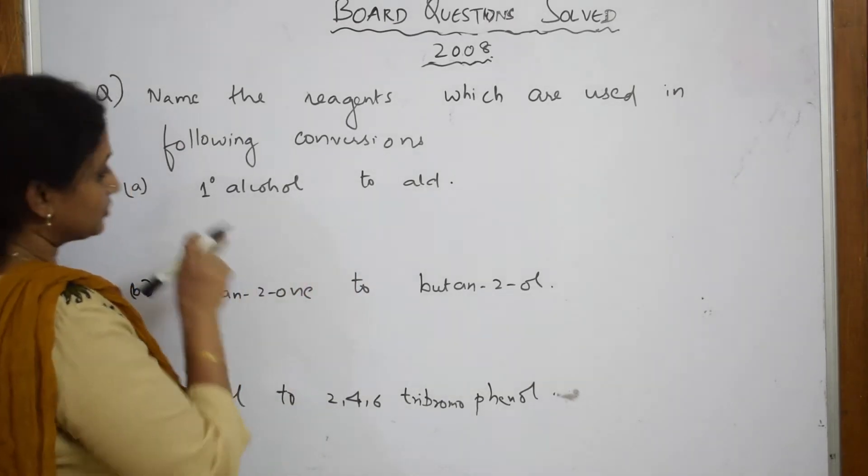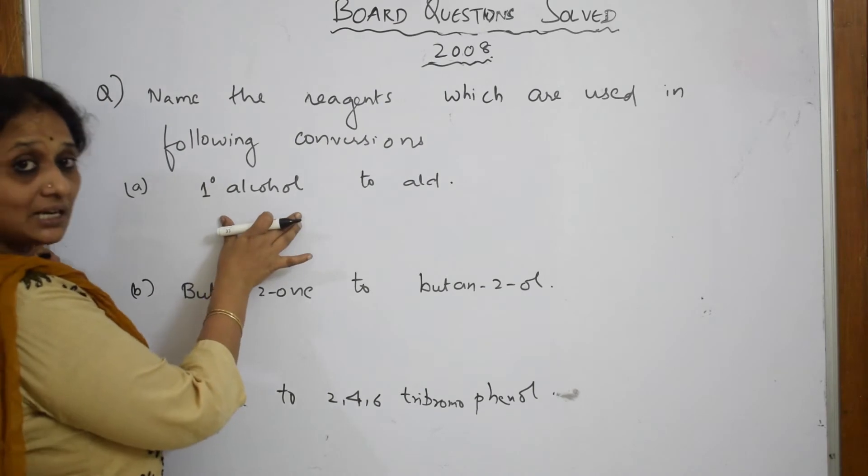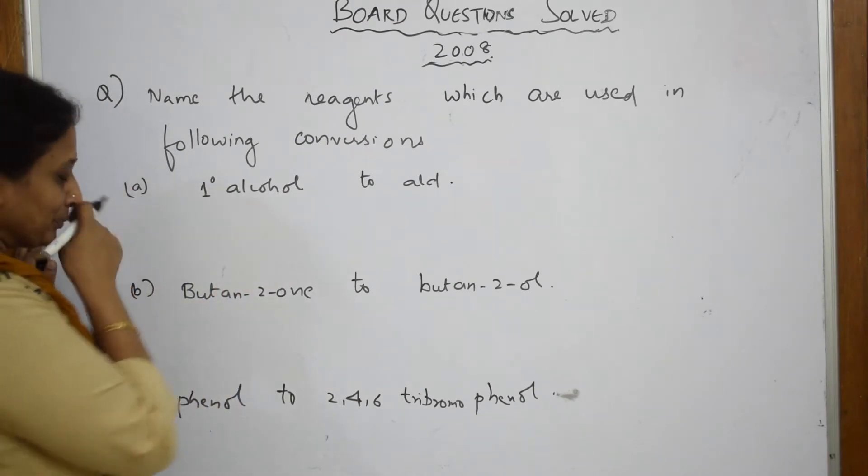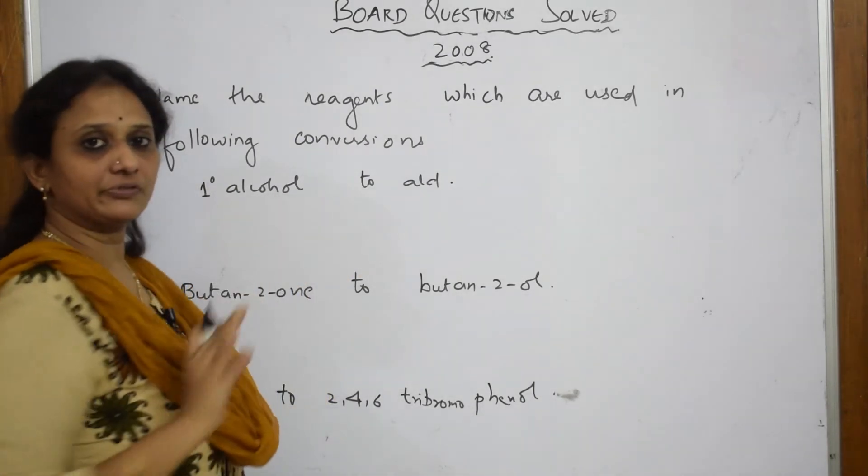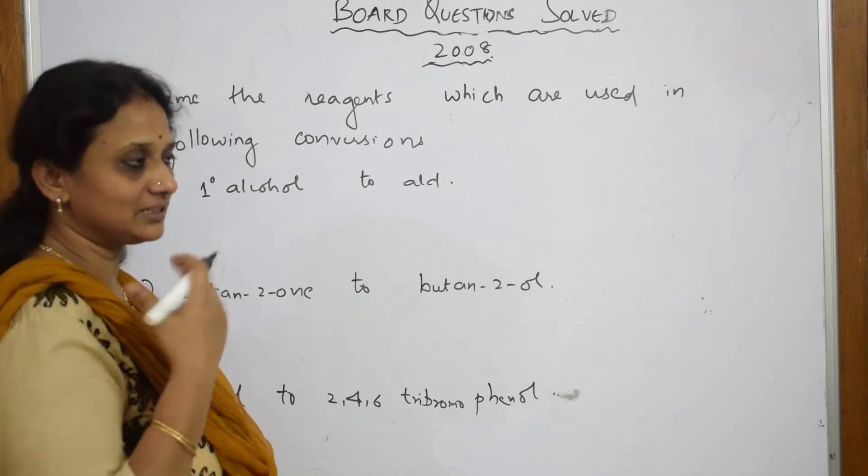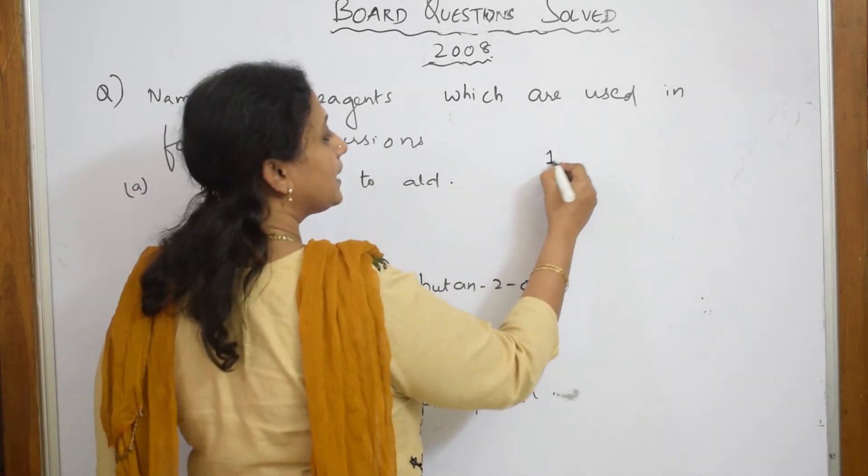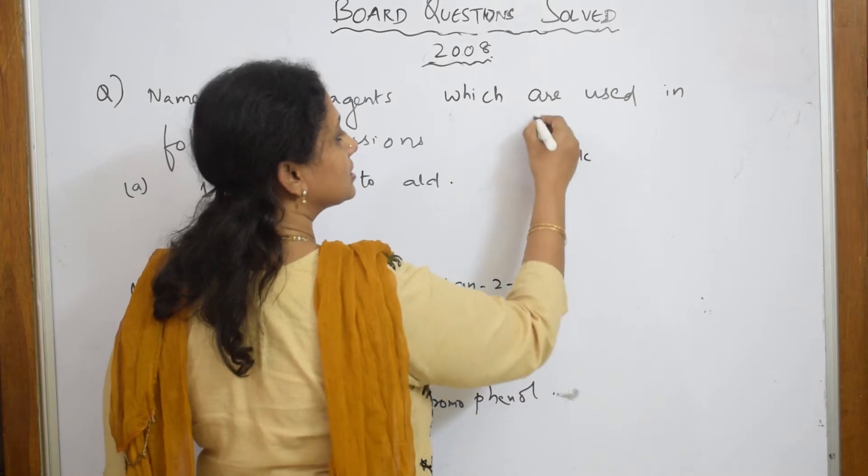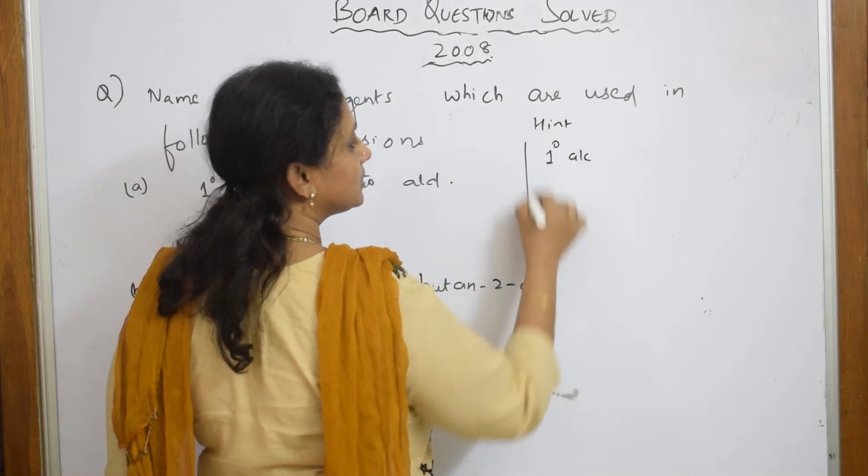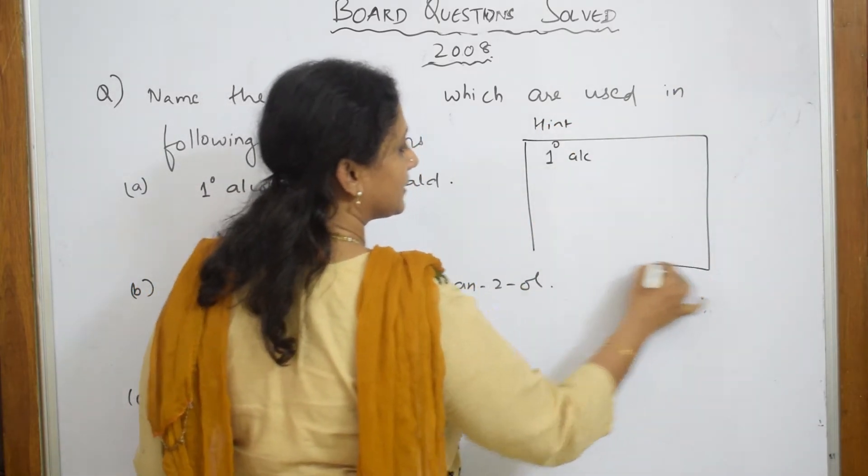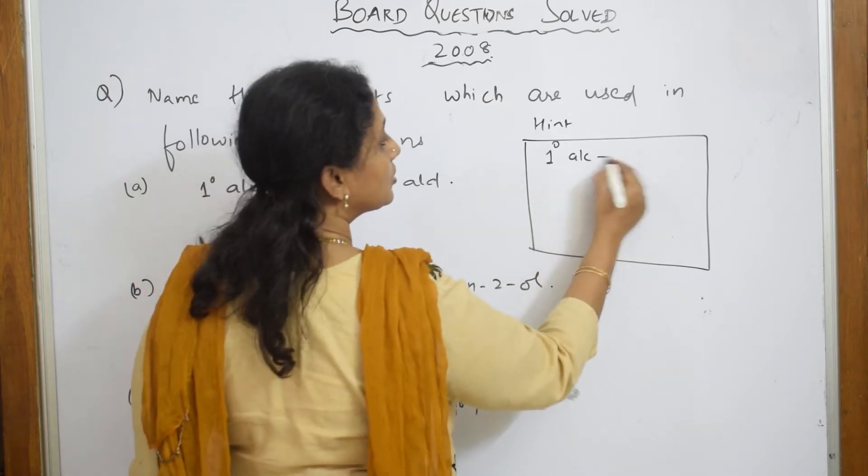They gave me primary alcohol to aldehydes. Whenever you see such type of questions, let us have one hint. Let us recollect that we very well know primary alcohols on oxidation gives us aldehydes.